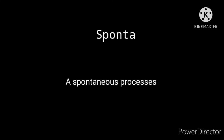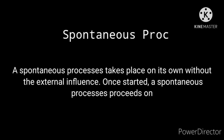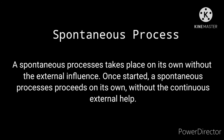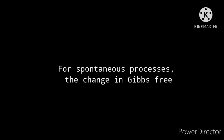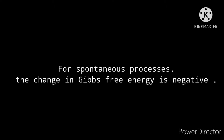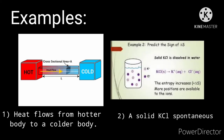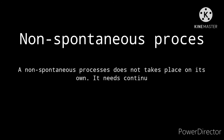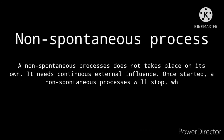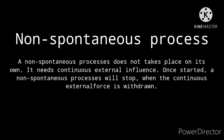Spontaneous processes take place on their own without external influence. Once started, a spontaneous process proceeds on its own without continuous external help. For spontaneous processes, the change in Gibbs free energy is negative. Examples of spontaneous processes: 1. Heat flows from a hot body to a cold body. 2. Solid KCl spontaneously dissolves in water. A non-spontaneous process does not take place on its own — it needs continuous external influence. Once started, a non-spontaneous process will stop when the continuous external force is withdrawn.